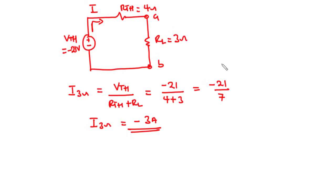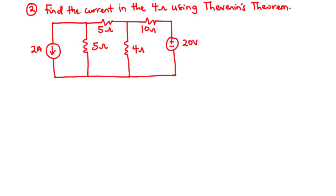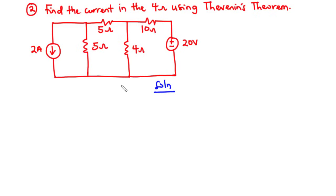Now let's take the next example. For the previous example we had two voltage sources. In this example we have one voltage source and one current source. We need to find the current flowing through the 4-ohm resistor using Thevenin's theorem. The first step is to remove the 4-ohm resistor, mark the terminals, and find VTH.